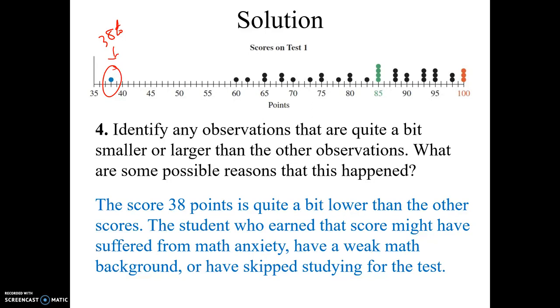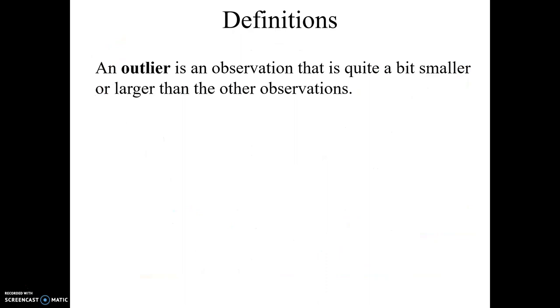Now what are possible reasons? You can just make up whatever you want, but it could have been math anxiety. It could have had a weak math background or didn't study for the test, had a bad day or whatever. Maybe they came in late and didn't get to finish the test. So there are a lot of possibilities on why this occurred, but this is called an outlier. An outlier is an observation that is quite a bit smaller or larger than other observations. And later on, we will talk about more precise ways of identifying outliers.